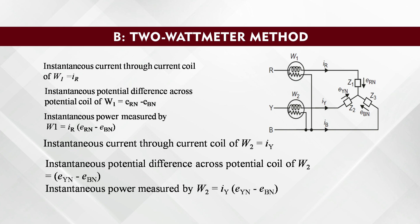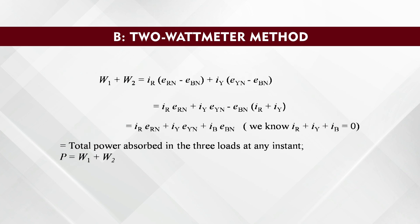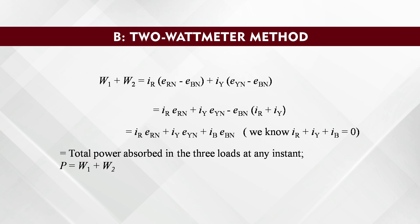The instantaneous potential difference across the potential coil of wattmeter 2 is equal to E_Yn minus E_Bn. As you can see in the circuit diagram, the instantaneous power measured by wattmeter 2 is the current in the Y phase, I_Y, multiplied by the voltage between Y phase and B phase, E_Yn minus E_Bn. So, the instantaneous power in wattmeter 2 equals I_Y multiplied by (E_Yn minus E_Bn). Since we are using the 2-wattmeter method, just add these two readings: W1 plus W2 equals I_R(E_Rn minus E_Bn) plus I_Y(E_Yn minus E_Bn).